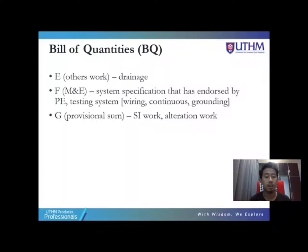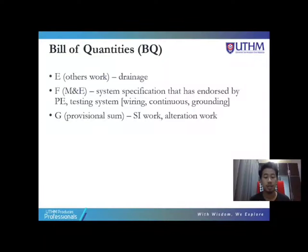Section F is mechanical and electrical. The system specification has to be endorsed by the PE. Testing has three components: wiring, continuity and grounding. Section G is the provisional sum, which covers specialist works and automation.